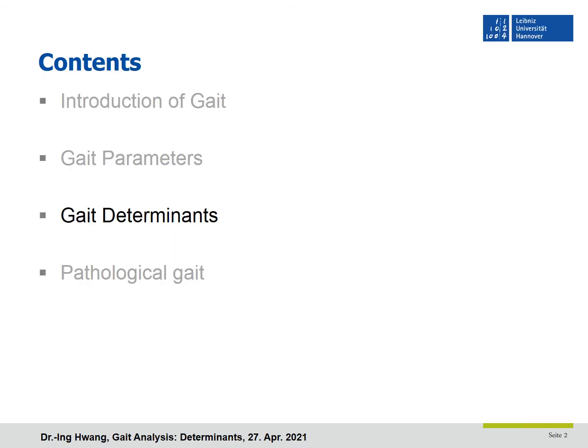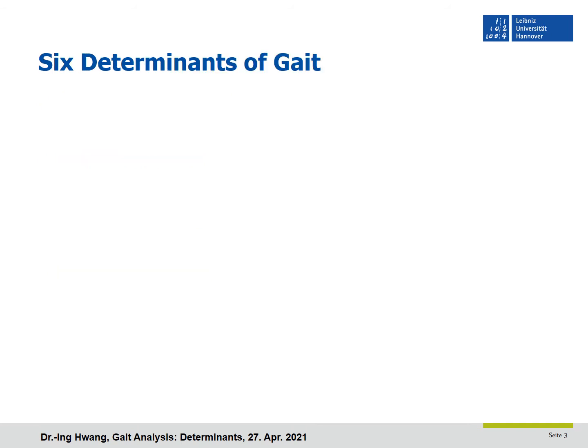I don't think we need another explanation, so let's move to the next page. With the parameters we studied before, can we distinguish healthy gait from pathological gait or identify one's gait?